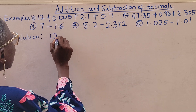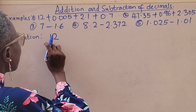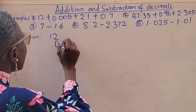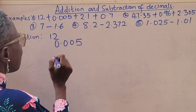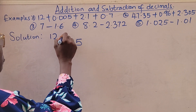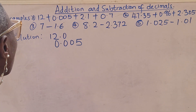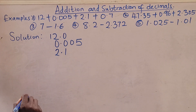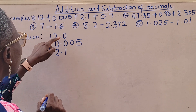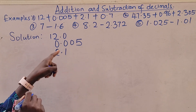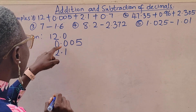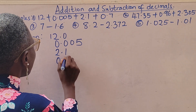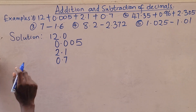I'll start with 12 — that's a whole number, not a decimal — so it becomes 12.0. Then followed by 0.005, then 2.1. I'm making sure that even though my numbers are not arranged in order by size, my decimal points are aligned.